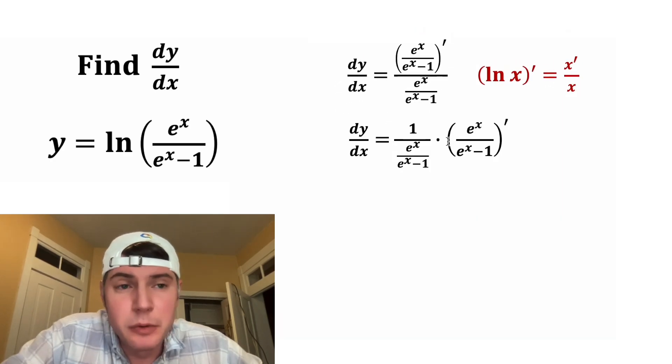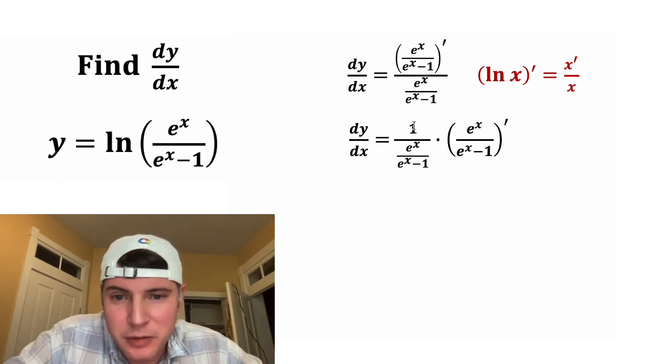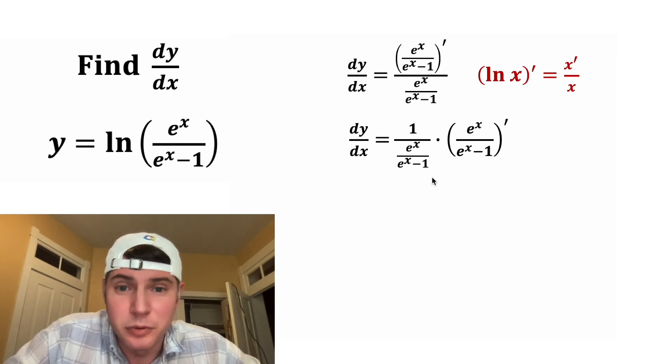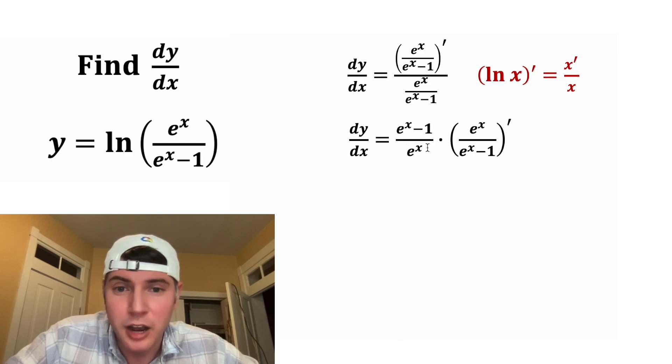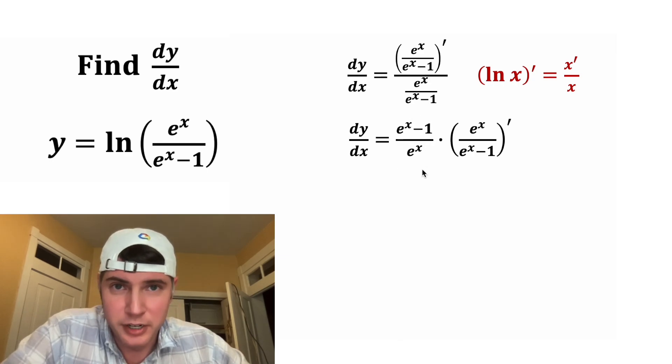So that's our first step. We can rewrite these as a product where we're multiplying 1 over this times the derivative of this. Anytime you have 1 over a fraction, it's basically the reciprocal, so we can flip it upside down. I put the e to the x minus 1 on top. So we have e to the x minus 1 over e to the x.